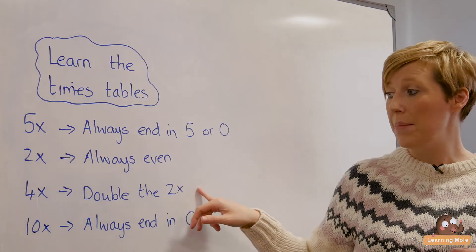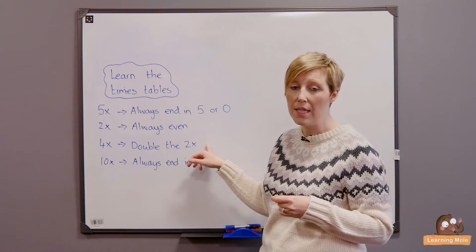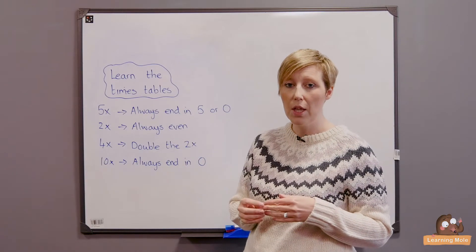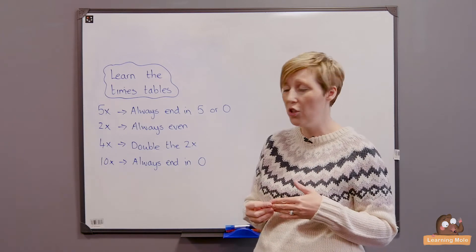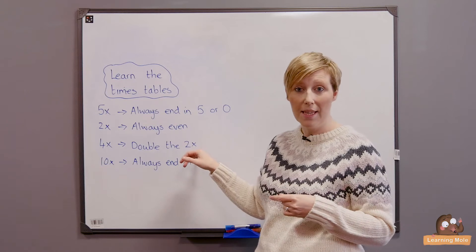Four times tables are double the two times tables. Children normally learn the two times tables quite quickly because they learn to count in steps of two, and it's just a matter of doubling that to double check.